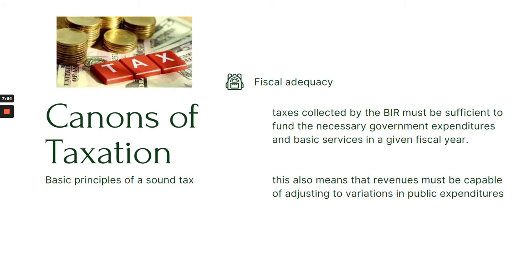What are the canons of taxation? These are the basic principles of a sound tax system. There are actually three canons of taxation. Number one is fiscal adequacy. Fiscal adequacy means that taxes collected by the Bureau of Internal Revenue or the BIR must be sufficient to fund the necessary government expenditures and basic services in a given fiscal year. It also means that revenues must be capable of adjusting to variations in public expenditures — the government plans its budget for the next year before the end of the current year, so revenues must be able to adjust accordingly.